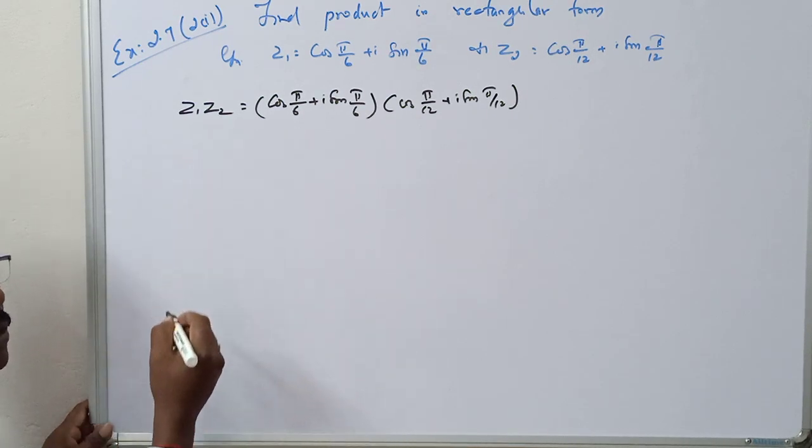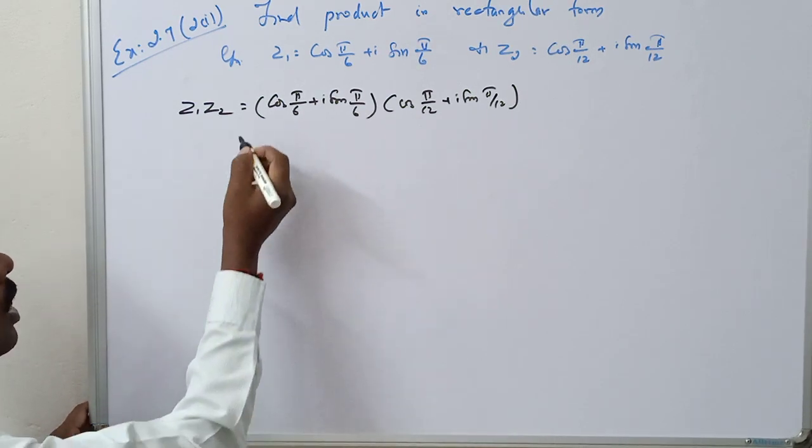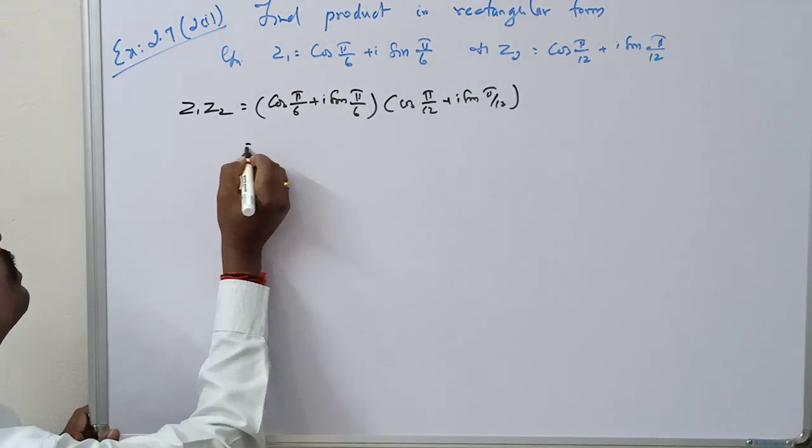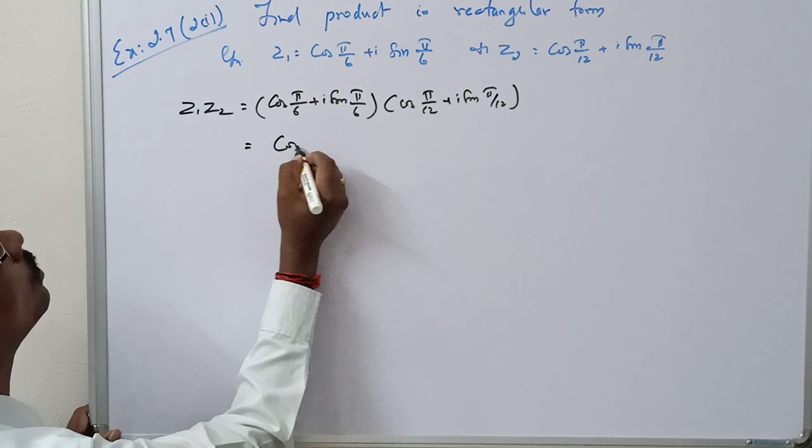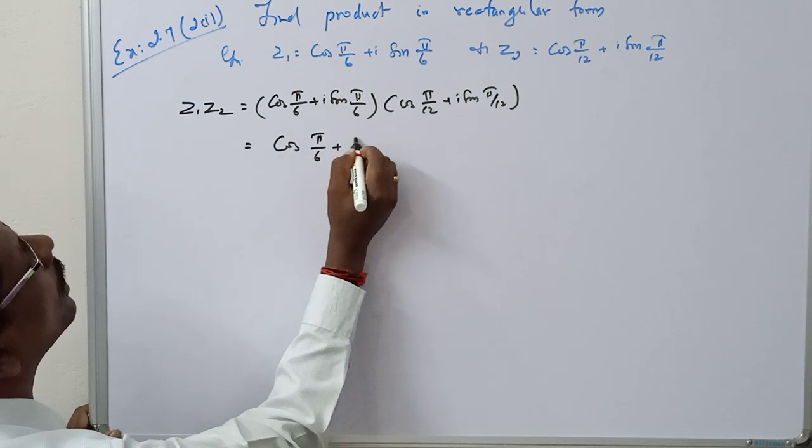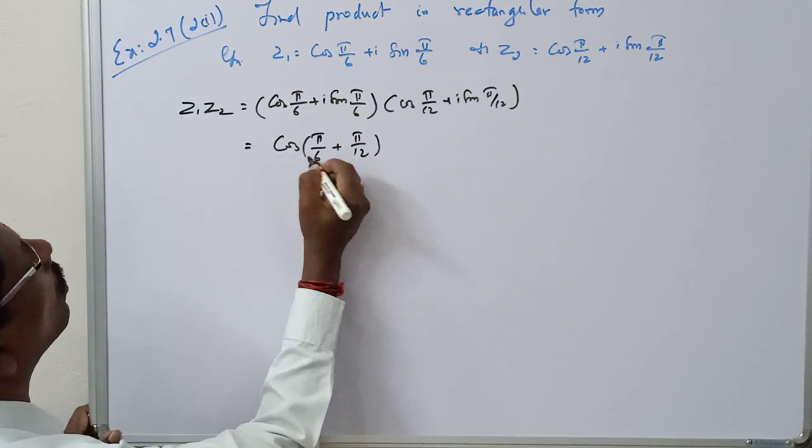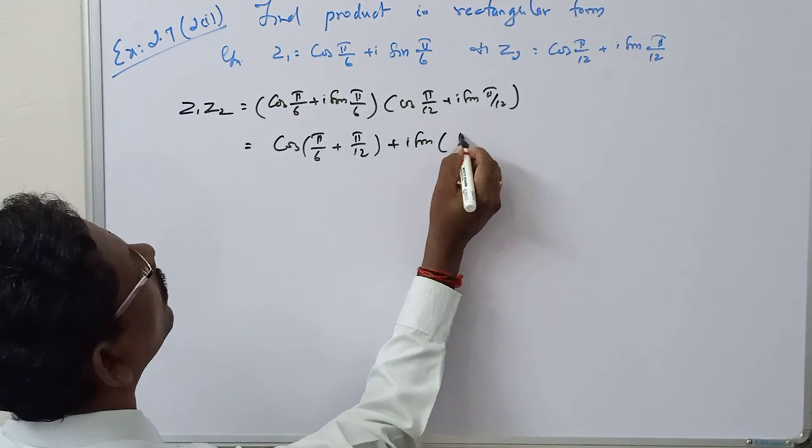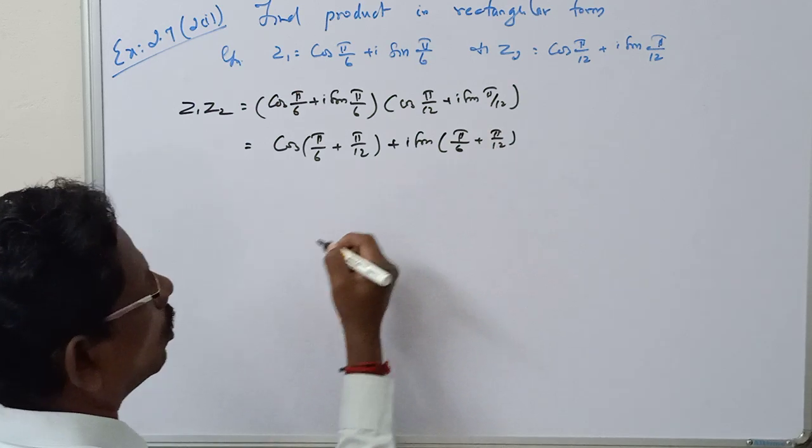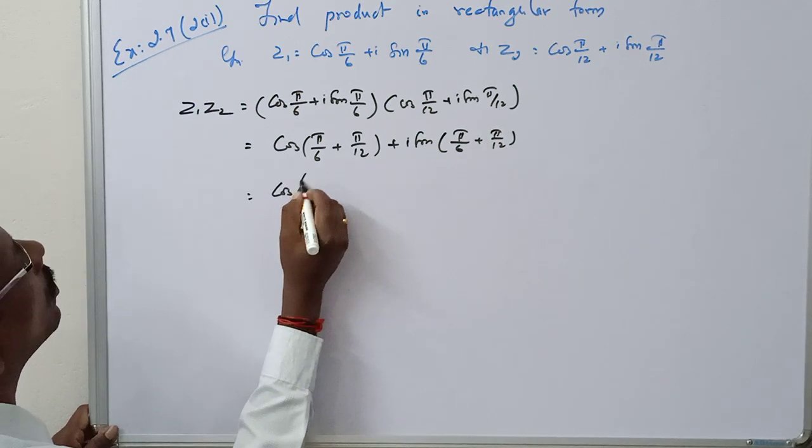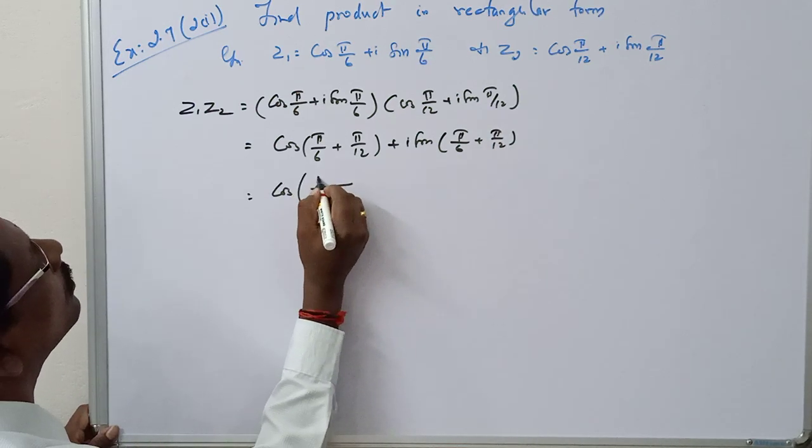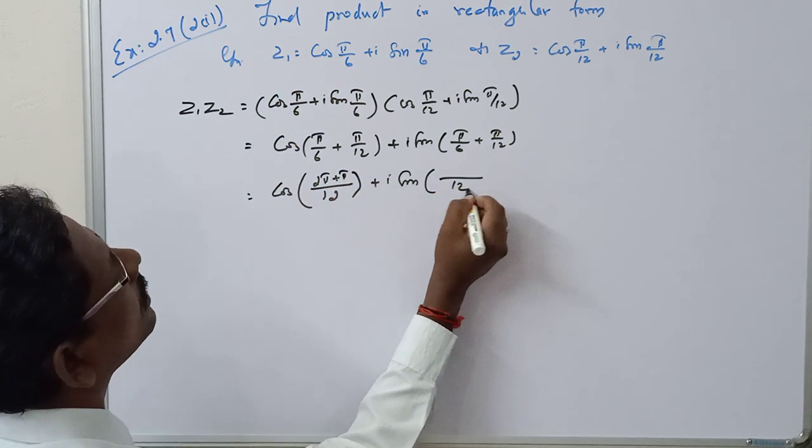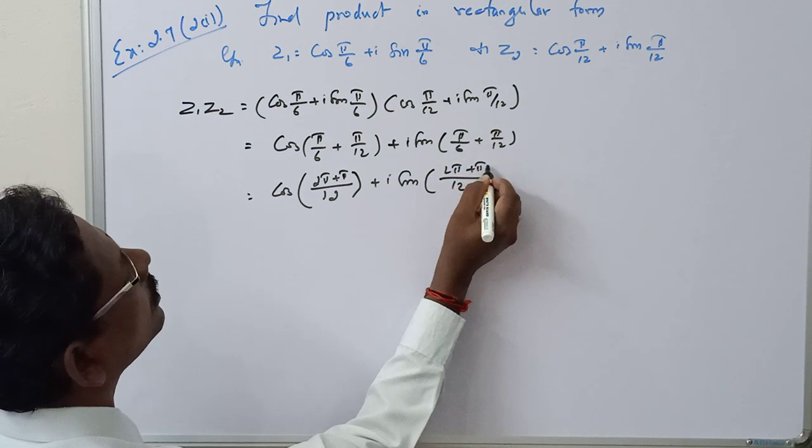You know Z1 into Z2 is equal to R1 into R2. So R1 is 1, R2 is 1. So 1 into cos(θ1 + θ2), cos 5π/6 plus 5π/12, plus i sin(θ1 + θ2), plus i sin 5π/6 plus 5π/12. Taking LCM 12: cos(10π + 5π)/12 plus i sin(10π + 5π)/12.